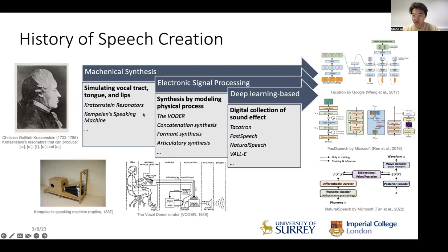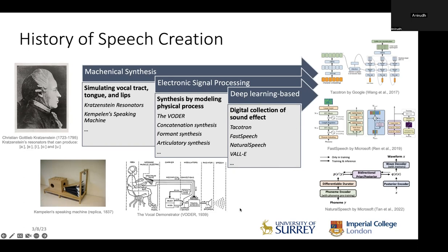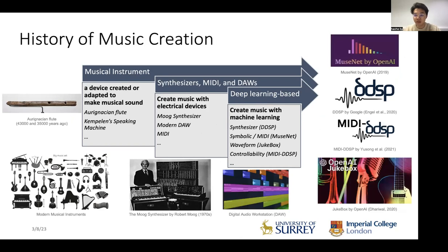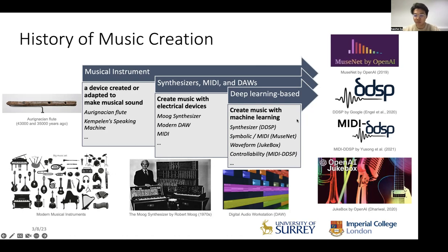For speech creation, earlier work tried to simulate the structure of the human vocal tract, including mechanical methods or electric devices. Most recently, deep learning methods have dominated, and a lot of work has emerged where people can barely distinguish synthesized from real recordings. For music, instruments are the earliest form; later, synthesizers, MIDI file format, and DAWs made creating music easier with computers. In recent years there are major breakthroughs with models like Jukebox, MIDI-DDSP, and MuseNet.